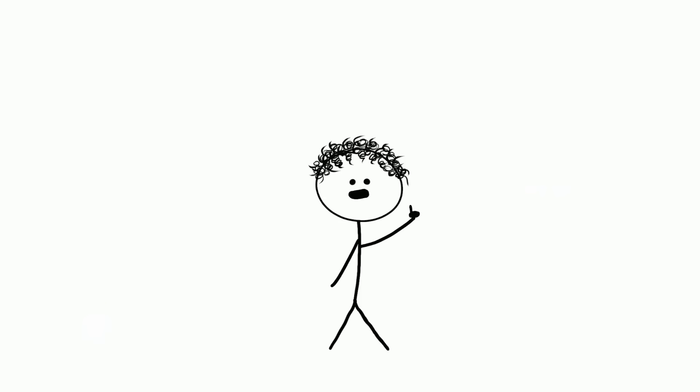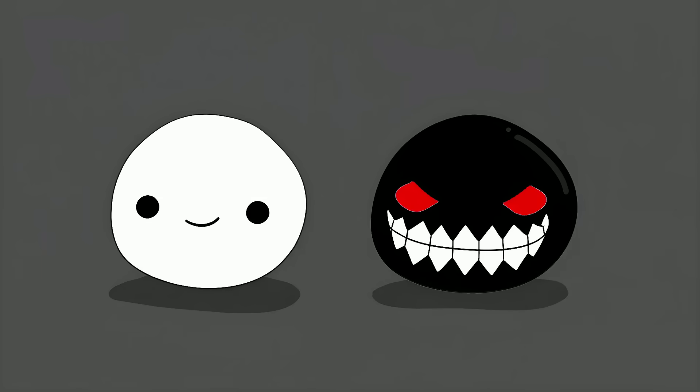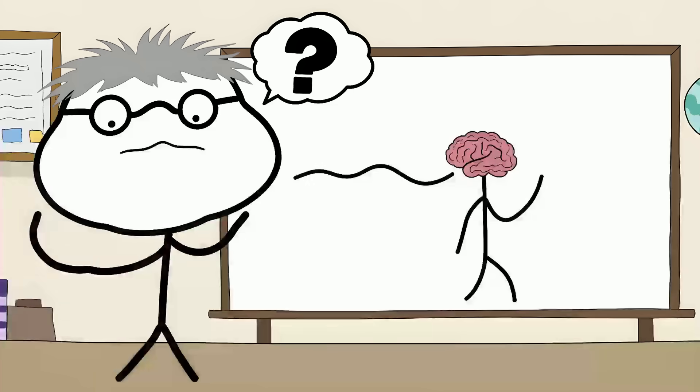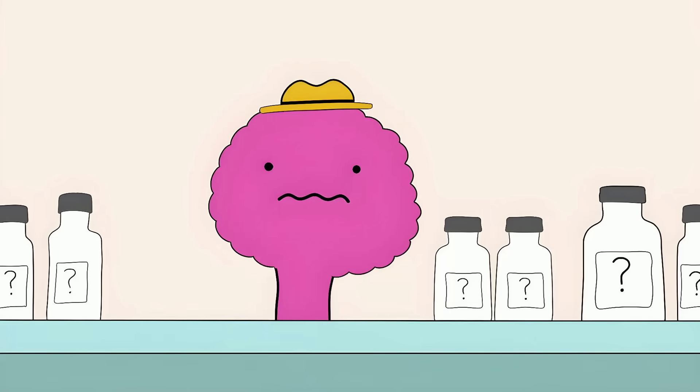But there's a dark side too. If you believe something will hurt you, your brain can actually make you feel sick. It's called the nocebo effect, placebo's evil twin. Your brain can create real pain just because you expect pain. Scientists still can't fully explain how our thoughts can cause real physical changes in our bodies. We all have this built-in pharmacy in our heads, but we don't know how to control it.